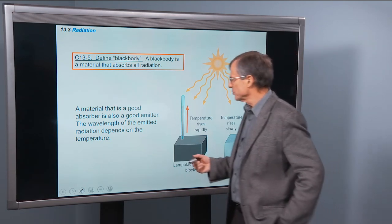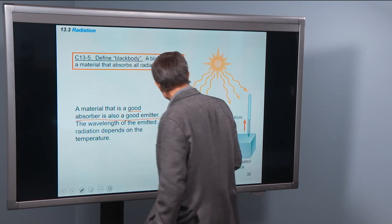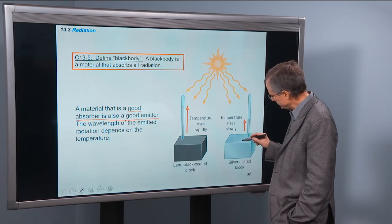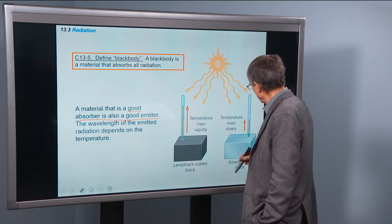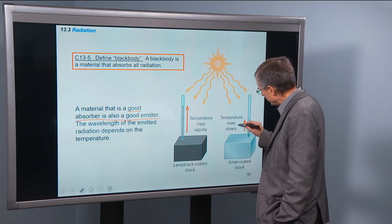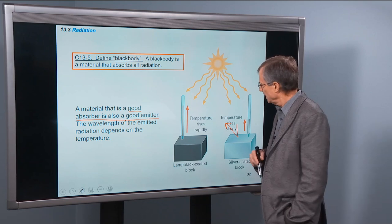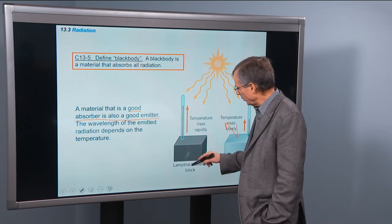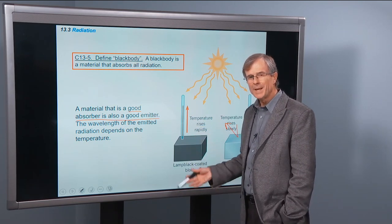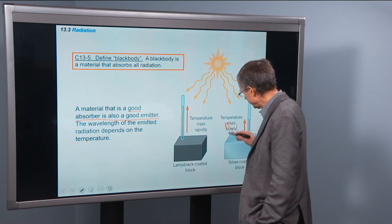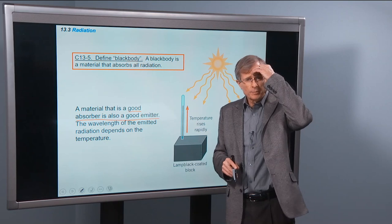A material that is a good absorber is also a good emitter. We're not talking about reflection here, not talking about a silver coated block, something that's highly reflective like a mirror. When you shine light on it, a lot of it just reflects back off and is not absorbed very well. A black, lamp black coated block will absorb that energy very well, but then it re-radiates it, not as a reflection, but it radiates energy out.